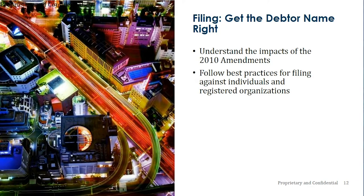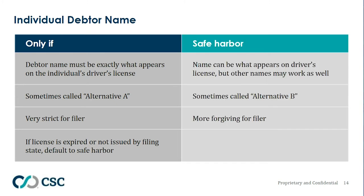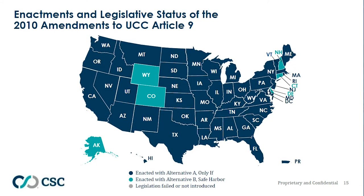Next up is UCC filing. Getting the debtor name right. It is important to understand the impacts of the 2010 amendments and follow best practices for filing against individuals and registered organizations. The 'only if' rule — also called Alternative A — means the debtor name must be exactly what appears on the individual's driver's license. If the license is expired or not issued by the filing state, you want to default to safe harbor. The safe harbor rule, also called Alternative B, is more forgiving because other names may work as well. As you can see from this map, an overwhelming majority of states are 'only if' Alternative A; just a handful are safe harbor Alternative B.